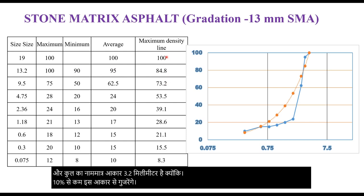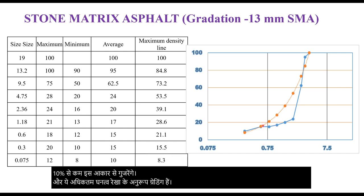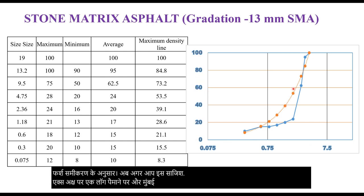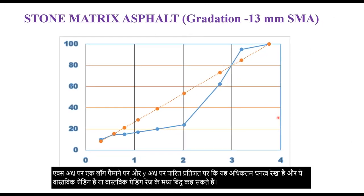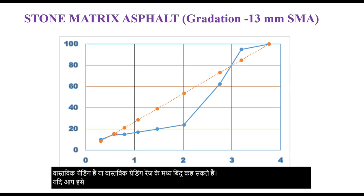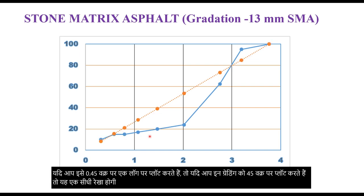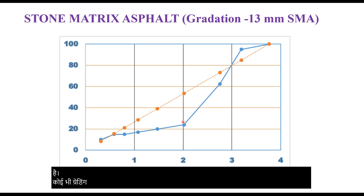These are the gradations corresponding to the maximum density line as per the Fuller equation. If you plot this on a log scale on the x-axis and percent passing on the y-axis, this is the maximum density line and these are the actual grading, or the midpoint of the actual grading range. If you plot these gradings on the 0.45 power curve, it will be a straight line representing the maximum density line, and the actual grading is below this maximum density line. Any grading which is below it will have an open grade mix and therefore very high air voids.